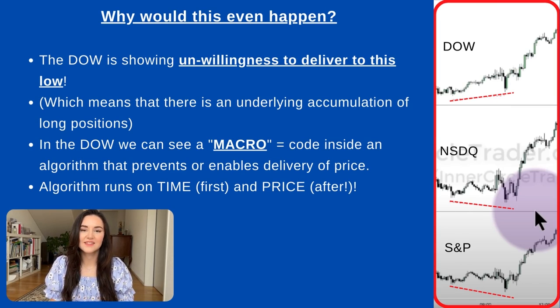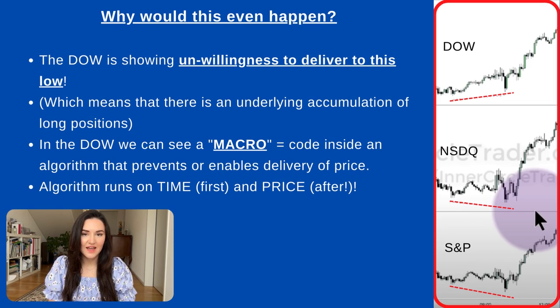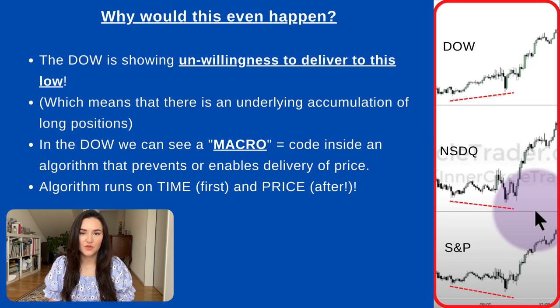We need the narrative. We need the story of the price and to really look at what is developing through time. Going back to the Dow — why is this even happening? Why is the price in the Dow unwilling to go lower? The Dow is showing us an unwillingness to go lower, which also means there is an underlying accumulation of long positions waiting in the background. ICT tells us that in the Dow Jones specifically, we can see a macro — an algorithm that runs the price — and it is preparing for the price to go higher.